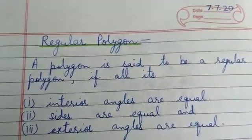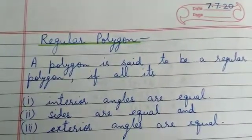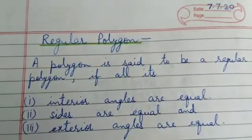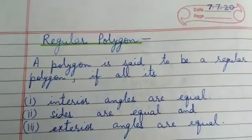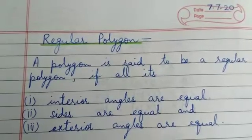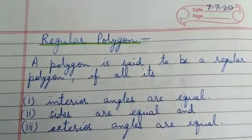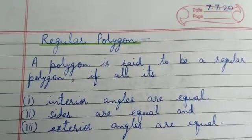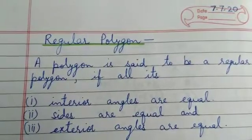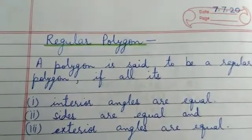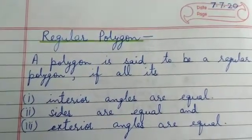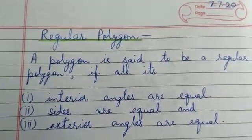In the same way, if in a pentagon all five sides are equal as well as each interior and exterior angle is equal, then that type of polygon is said to be a regular polygon — a regular pentagon, which has five sides.